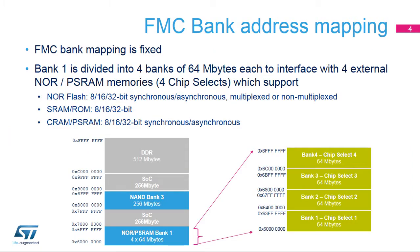The mapping of the FMC bank addresses is fixed. Bank 1 is used by the NOR PSRAM memory controller. Bank 3 is used by the NAND memory controller. All other banks are not used by the flexible memory controller and are available to the SOC memory map.